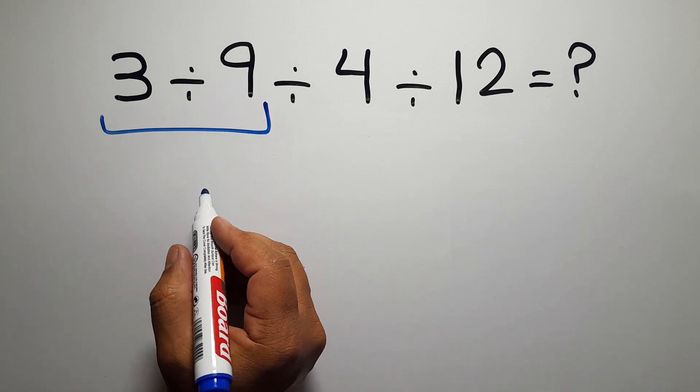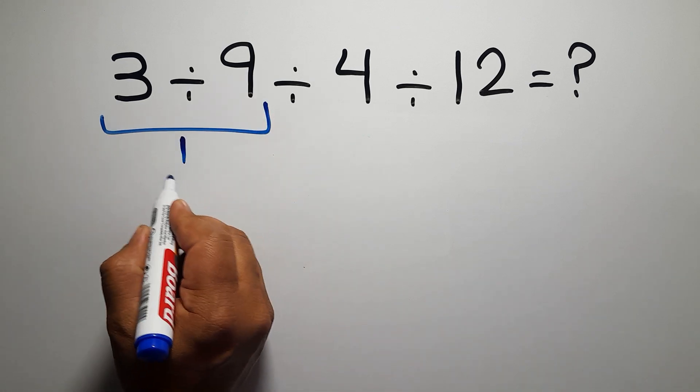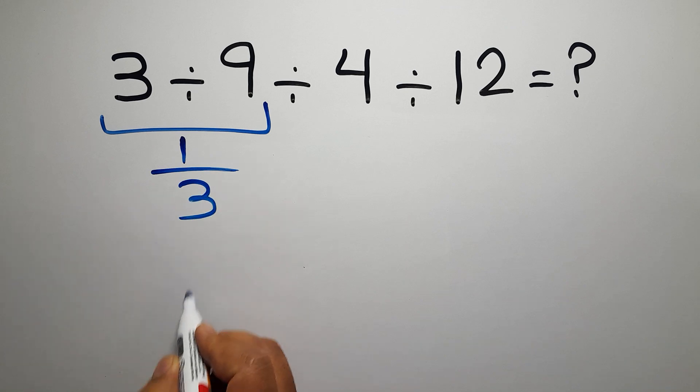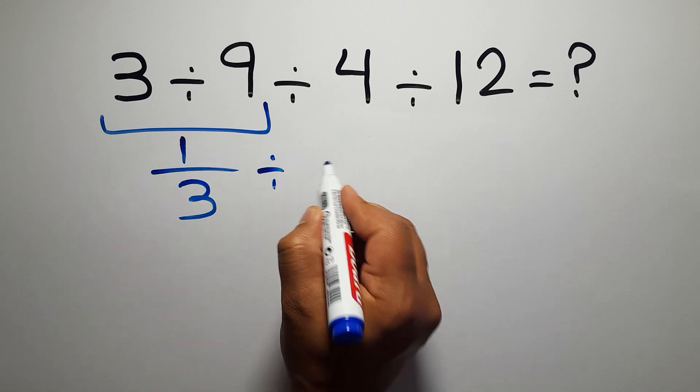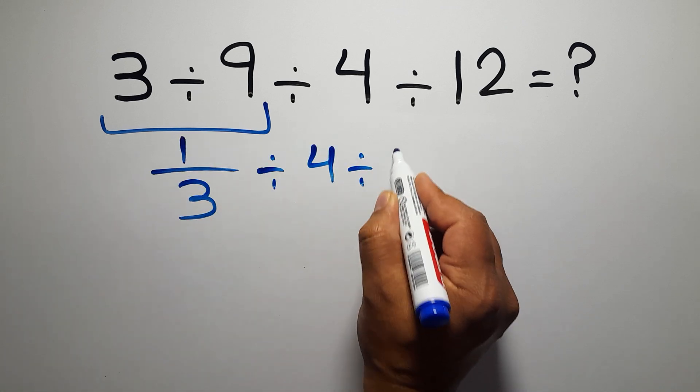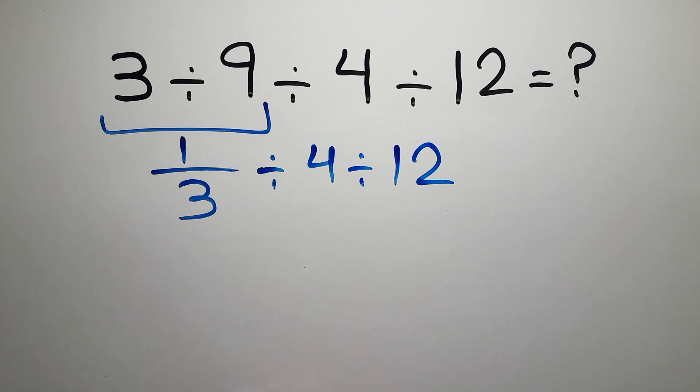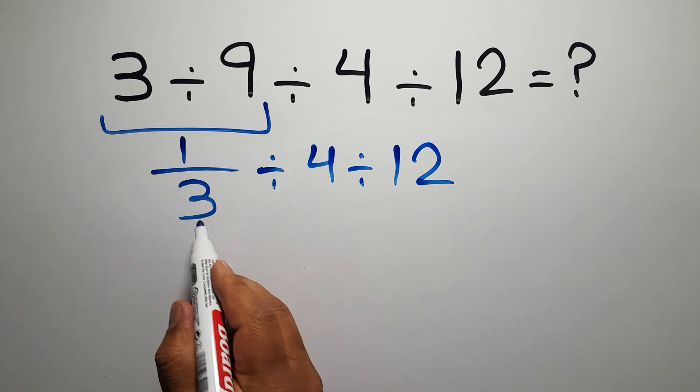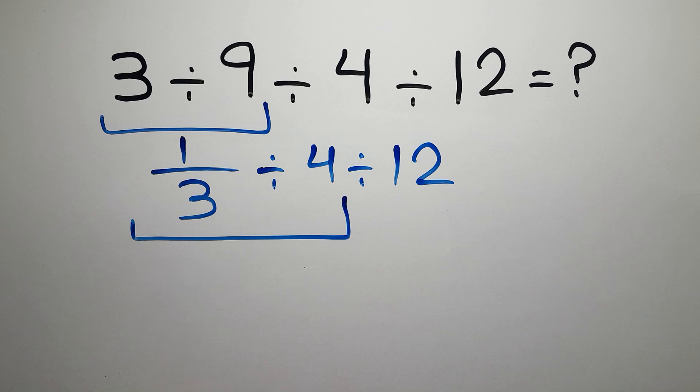3 divided by 9 can be written as 1 over 3. So 1 over 3 divided by 4 divided by 12. Now, we have to do this division, 1 over 3 divided by 4.